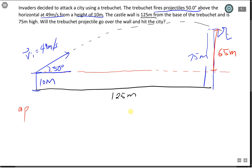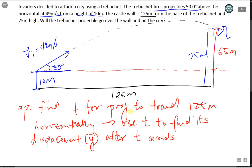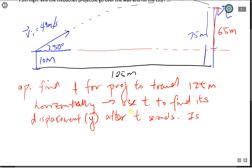Here is our approach. We're going to find the time for our projectile to travel 125 meters horizontally. Then we're going to use the time to find its displacement in our y direction after t seconds. The displacement is the y.